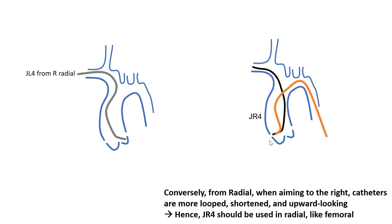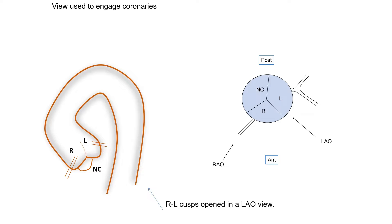An important basic idea is which view we use to engage. It's the LAO view — left anterior oblique. LAO spreads out and opens the right versus the left cusp, and makes you orthogonal to the ostia of the right and left coronary arteries. That's why LAO is also a good view for coronary ostia in angiography. When you want to engage the left coronary, you make your catheter point in that direction; for the right coronary, you make it point just in front of you.